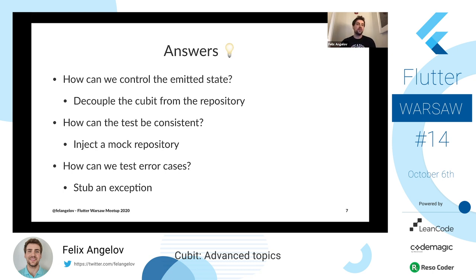The first and probably most important thing is having a layered architecture with strict boundaries. Having that separation is probably the most important thing when writing testable code. The cubit — the weather cubit — doesn't know where the weather data is coming from, doesn't know if it's coming from an API or a database. All it knows is it can ask this weather repository for some weather. Having that clear separation is step number one to being able to easily test your code.